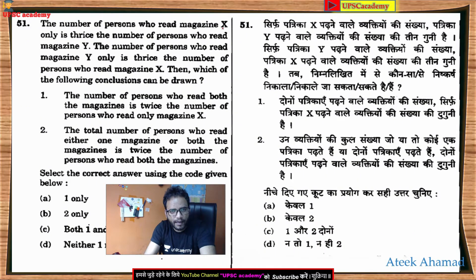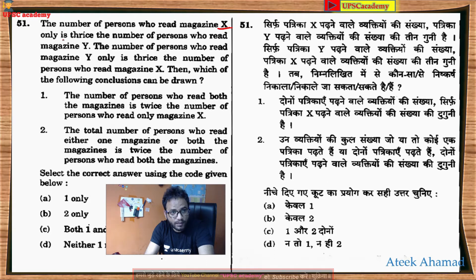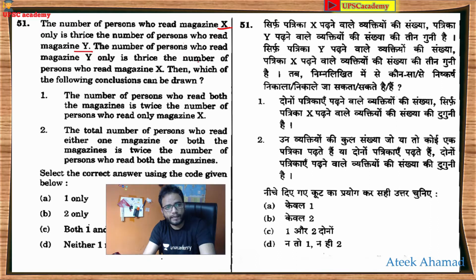The number of persons who read magazine X only is thrice the number of persons who read magazine Y only. The number of persons who read magazine Y only - ye important hai, dhyaan rakhiye - is thrice the number of persons who read magazine X.